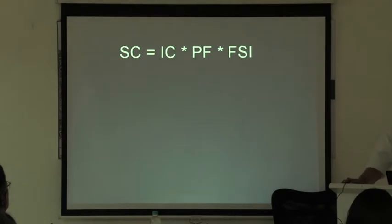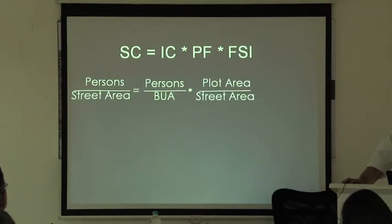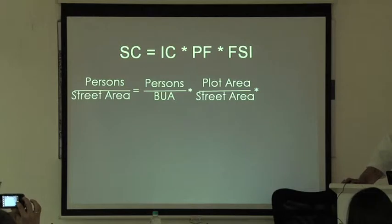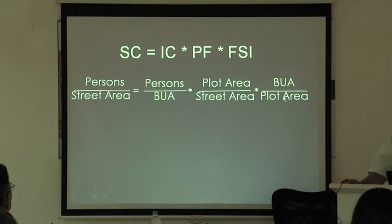Here is the formula expressed clearly. Street crowding is persons per hectare of street area. Internal crowding is persons per hectare of built-up area. Plot factor is buildable plot area upon street area. And FSI is built-up area upon plot area. On the right-hand side, built-up area cancels out, plot area cancels out, and you are left with persons upon street area — which is the left-hand side.